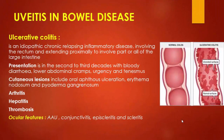Uveitis in bowel disease. Ulcerative colitis is an idiopathic chronic relapsing inflammatory disease involving the rectum and extending to all or some parts of the large intestine, characterized mainly by ulcerations presenting in the third decade with bloody diarrhea, lower abdominal pain, urgency, and tenesmus. It can be associated with cutaneous lesions like abscess, ulceration, erythema nodosum, and pyoderma gangrenosum. Other features include arthritis, hepatitis, and thrombosis. Ocular features include acute anterior uveitis, conjunctivitis, episcleritis, and scleritis.